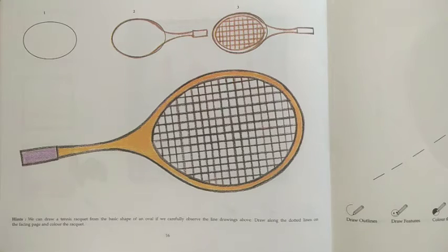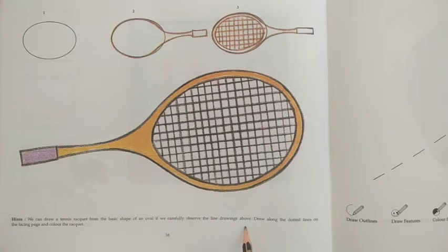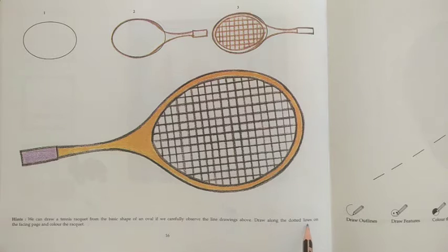Let's start with hints. We can draw a tennis racket from the basic shape of an oval if we carefully observe the line drawing above. Draw along the dotted lines on the facing page and color the racket.